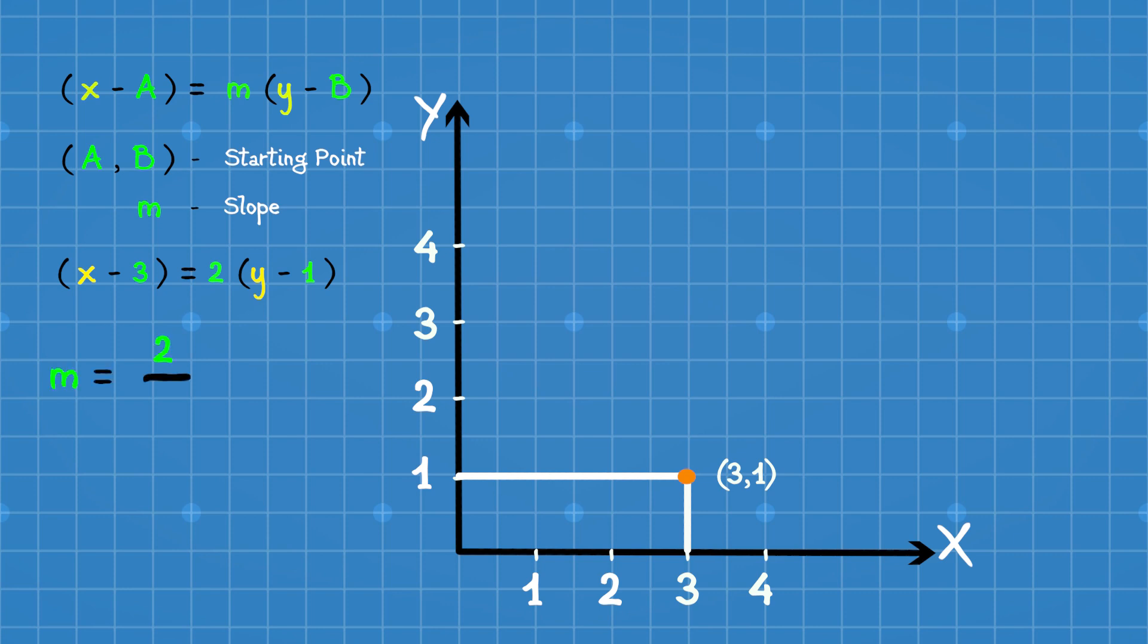The slope can be written as 2 by 1. 2 is rise and 1 is run. From the starting point, we move 2 points up on the y-axis and 1 point right on the x-axis. This gives another point. Joining it with the starting point gives the line segment.